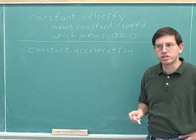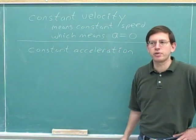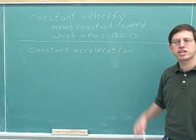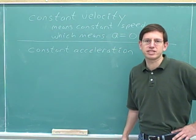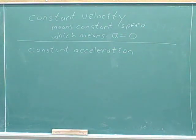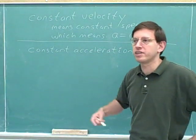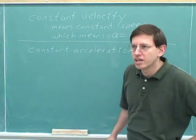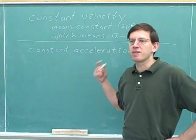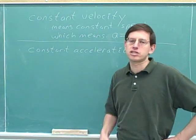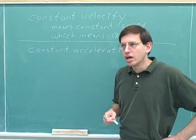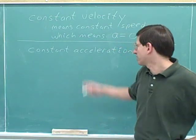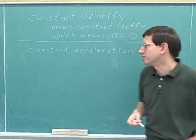Let's think about a different situation for one-dimensional motion: constant acceleration. What does constant acceleration tell you about the velocity? It certainly does not tell you that the velocity is constant. All that constant acceleration means is that you are speeding up at a constant rate or slowing down at a constant rate. Or it's possible that you could have a constant acceleration of zero, and then you would have a constant velocity.